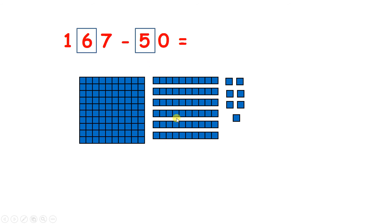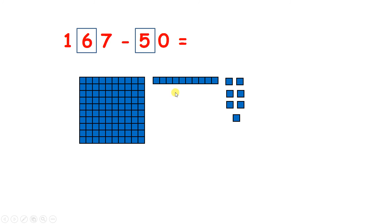So if we subtract one, two, three, four, five tens, we now have 117 because six minus five is one.